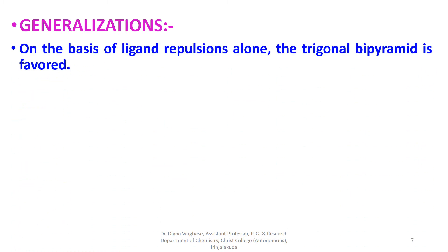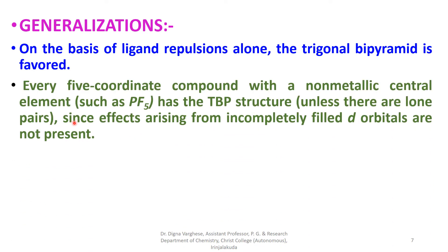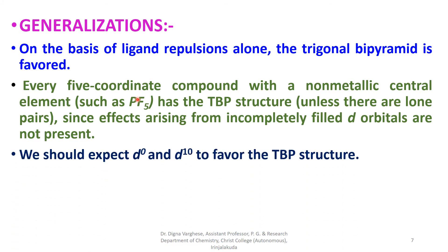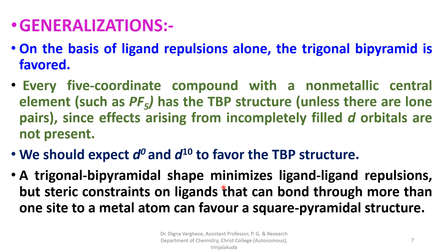On the basis of ligand repulsions alone, the trigonal bipyramidal geometry is favored. Every five-coordinate compound with a non-metallic central element, such as phosphorus pentafluoride (where the central element is phosphorus), has the TBP structure, since effects from incompletely filled d-orbitals are not present. A trigonal bipyramidal shape minimizes ligand-ligand repulsions, but steric constraints on polydentate ligands can favor a square pyramidal structure.